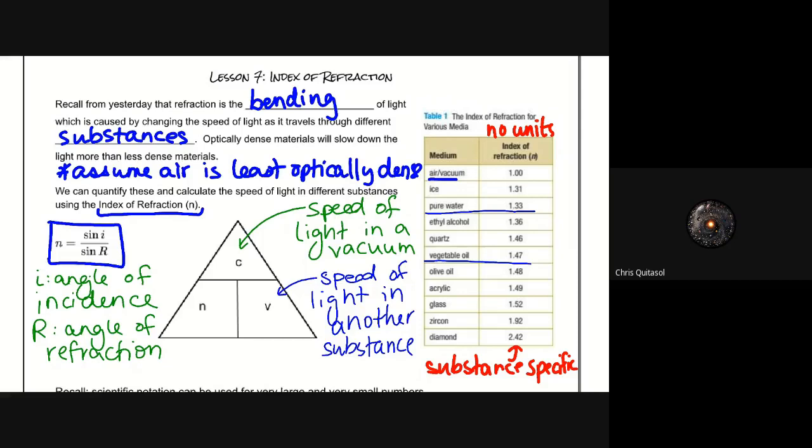So we can quantify these and calculate the speed of light in different substances using what's called the index of refraction. So if you recall from yesterday, when we looked at sine i over sine r, right there, we calculated that ratio and a lot of you were like, well, Mr. Q, what the heck does that mean? Well, now I'm putting it into context for you with regards to that definition of it. It gives us what's called the index of refraction. It tells us how dense or not dense that medium is.